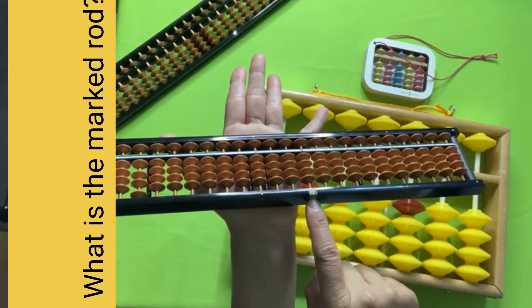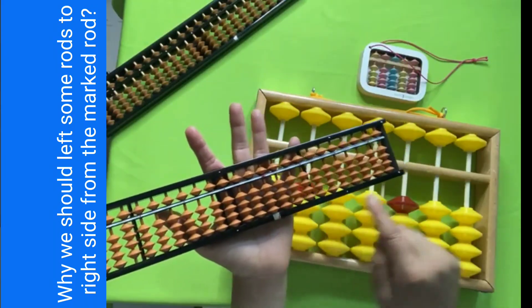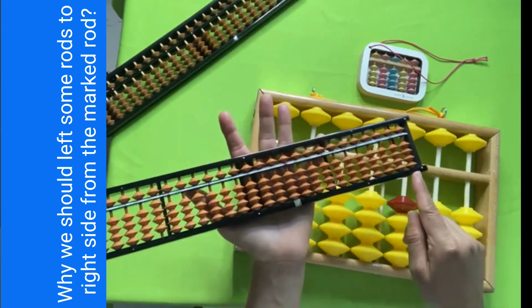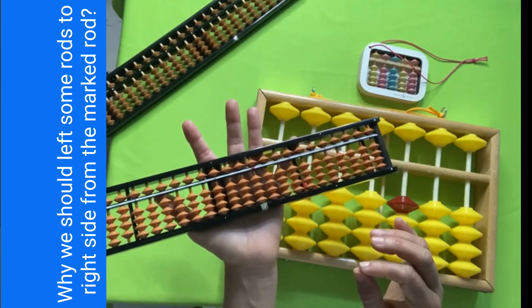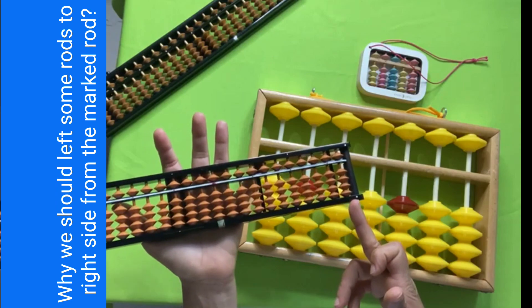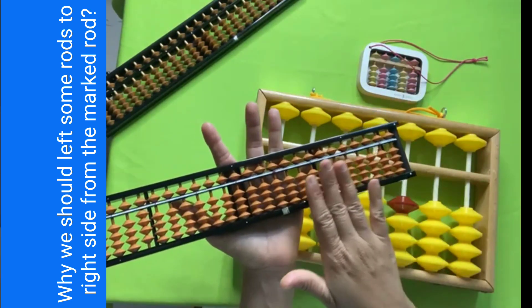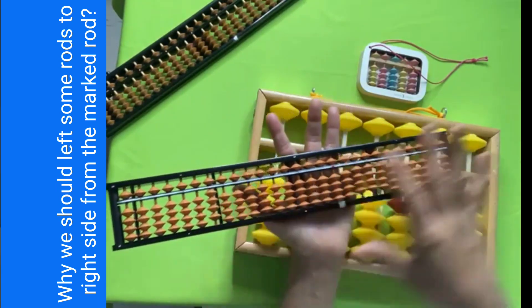Here is one question: why did I leave some rods from the marked side? It's only used in division. You cannot start your calculation from this very edge rod. You have to leave these rods to your right side, and this is enough for you.